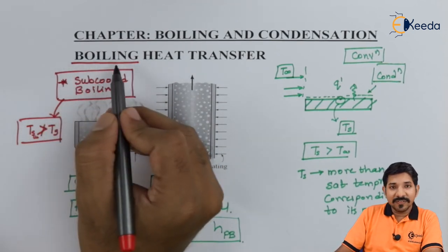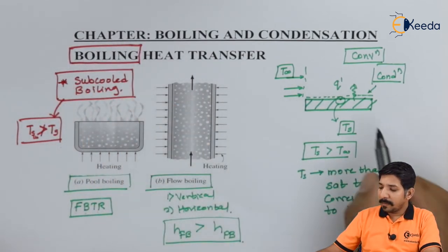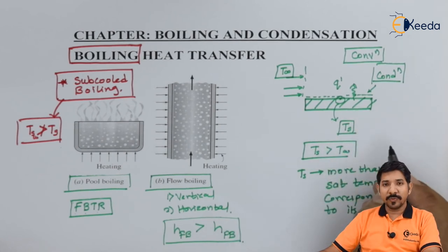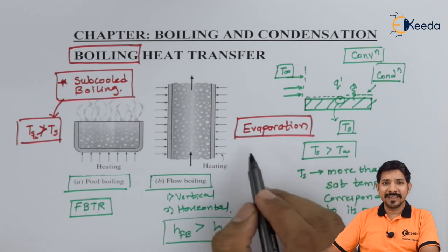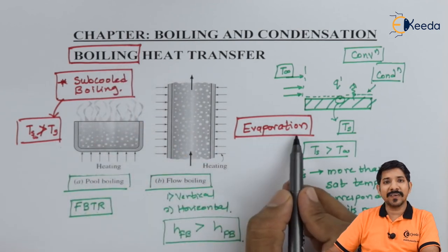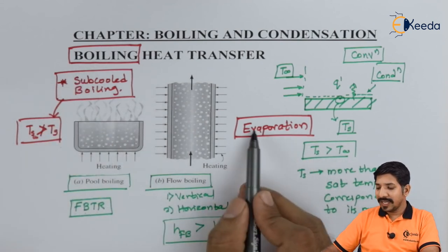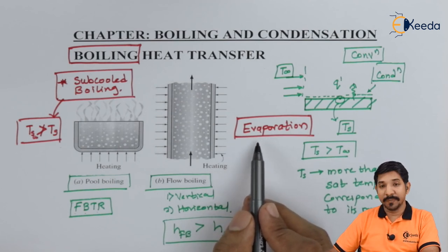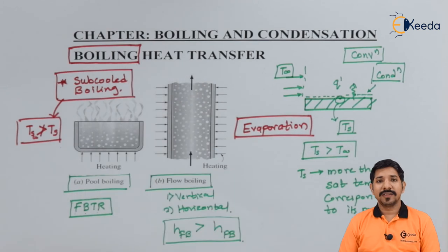There is a difference between boiling and evaporation. In boiling, the temperature reaches the saturation temperature and then boiling takes place. In evaporation, it is the pressure that reaches the saturation pressure corresponding to the temperature. In both cases heat is transferred due to phase change, but the driving mechanism differs. Evaporation depends on many factors just like boiling.